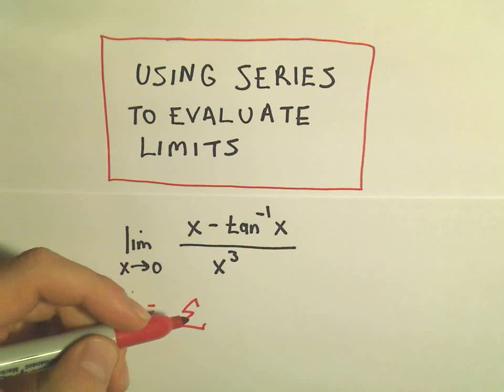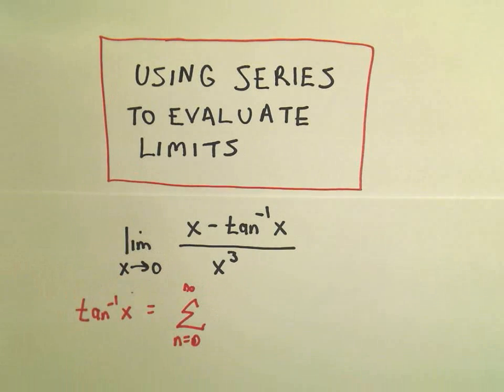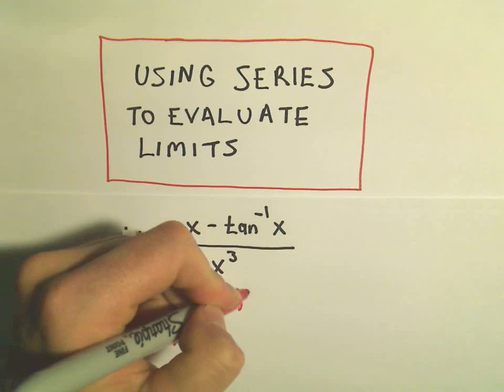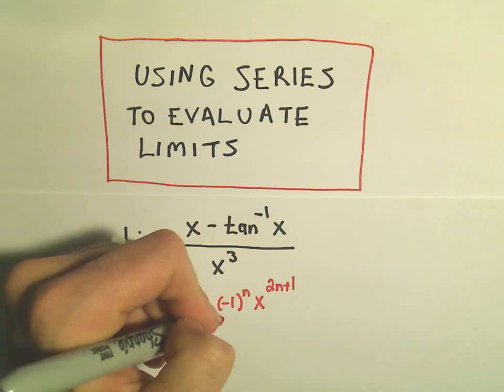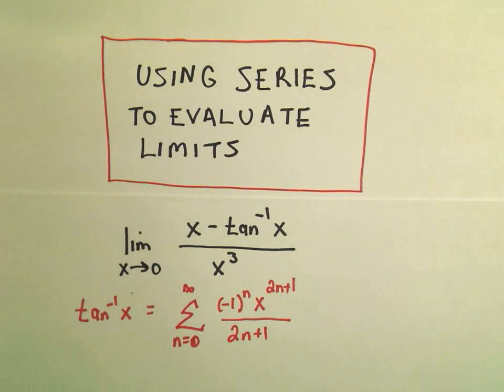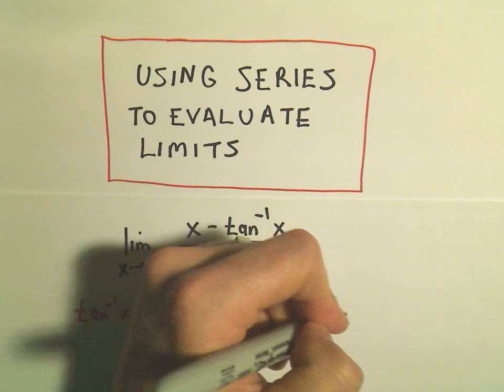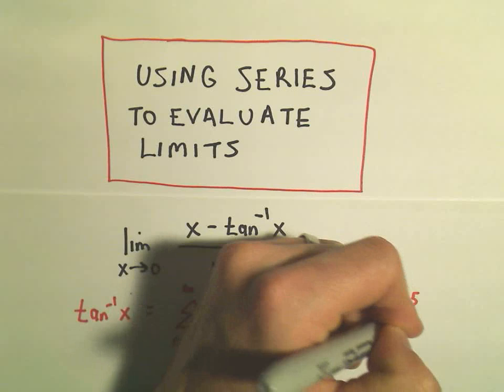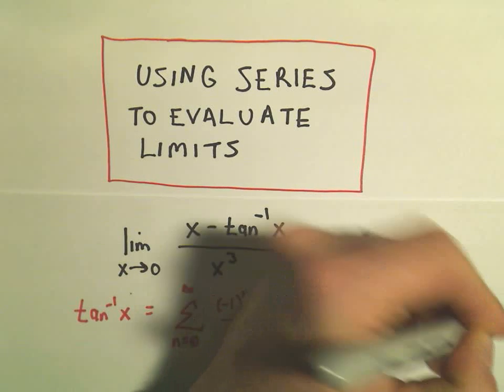And the series expansion for arctangent is from n equals 0 to infinity, negative 1 to the n, x to the 2n plus 1, and all of that is divided by 2n plus 1. And I'm going to expand out a few terms here. We would have x minus x cubed over 3, plus x to the 5th over 5, minus x to the 7th over 7, etc.